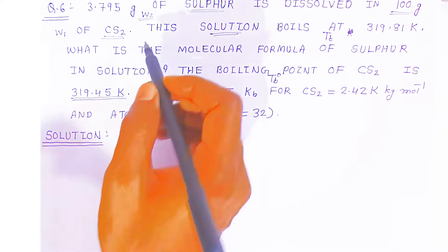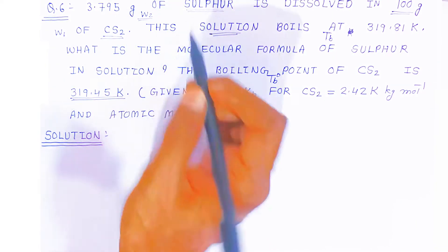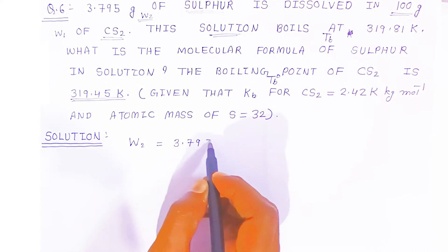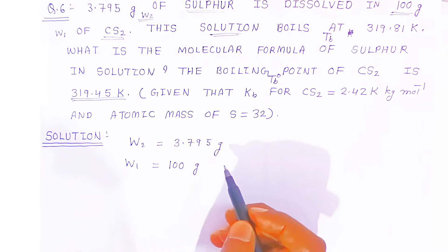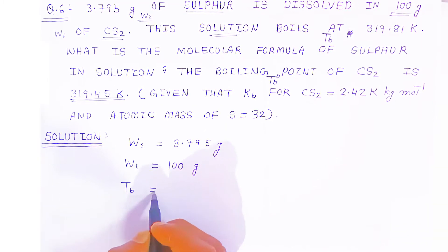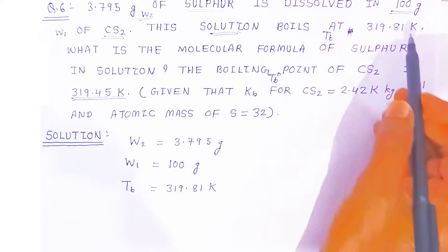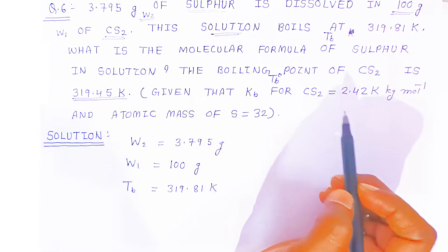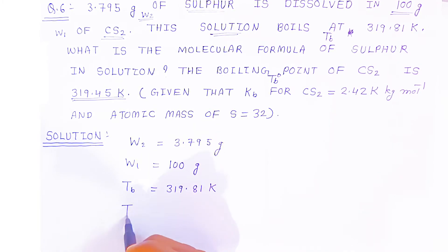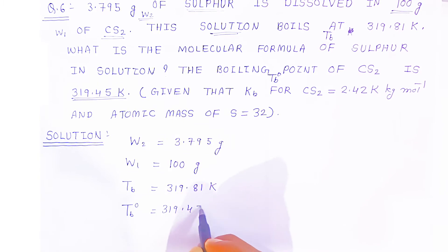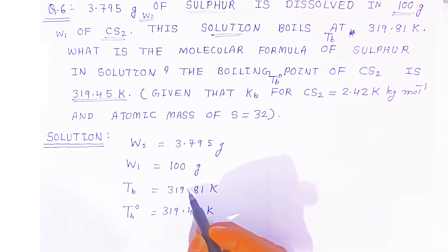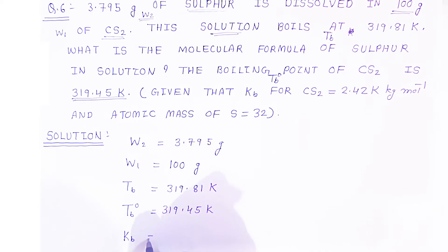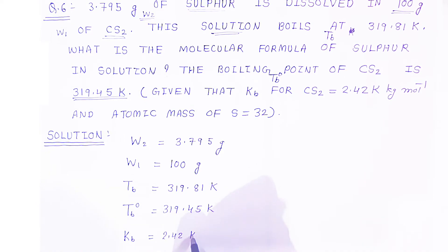Let us write down the given data. Weight of solute (sulfur) W₂ = 3.795 gram. Weight of solvent W₁ = 100 gram. Boiling point of solution Tb = 319.81 Kelvin. Boiling point of pure solvent T⁰b = 319.45 Kelvin. Note that the solution always has a higher boiling point than the pure solvent. Kb of carbon disulfide = 2.42 Kelvin kilogram per mole.